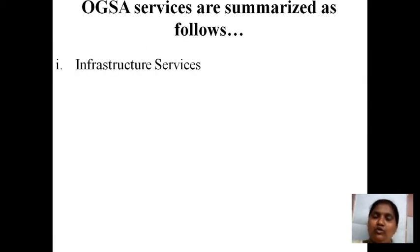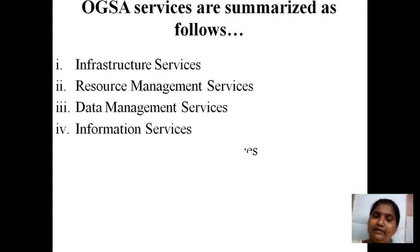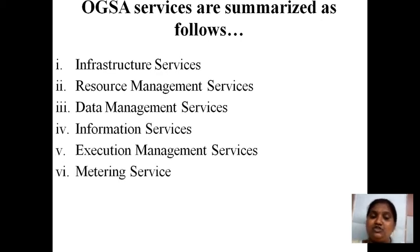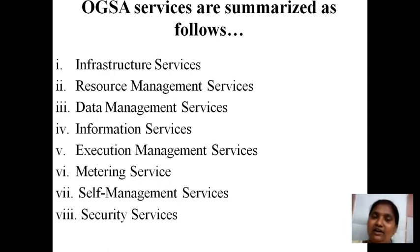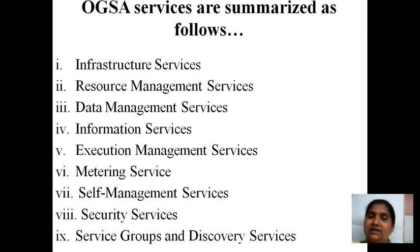Here is a list of services provided by OJSA: first, infrastructure; resource management; data management; information; execution management; metering service; self-management service along with security services. Totally, OJSA is going to provide around 8 services — and we also have one more service: service groups and discovery services.